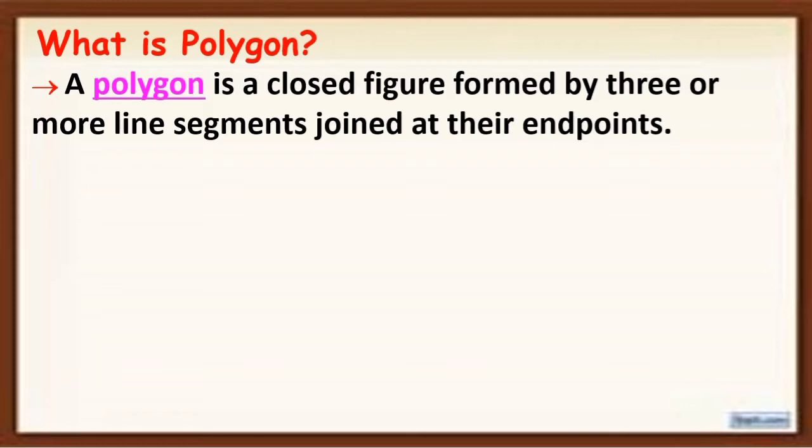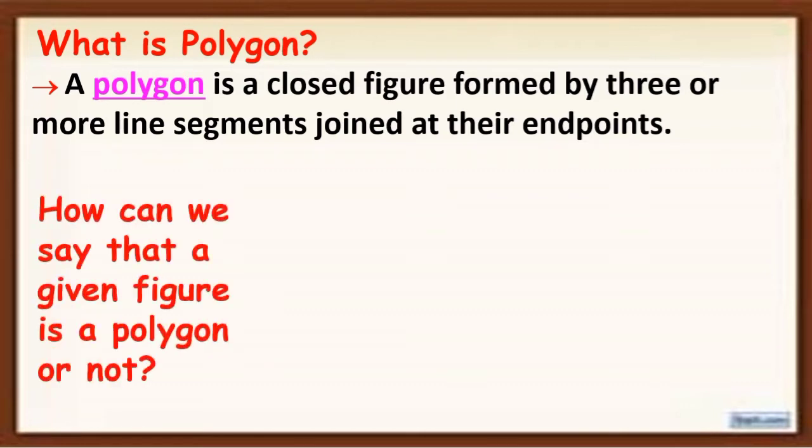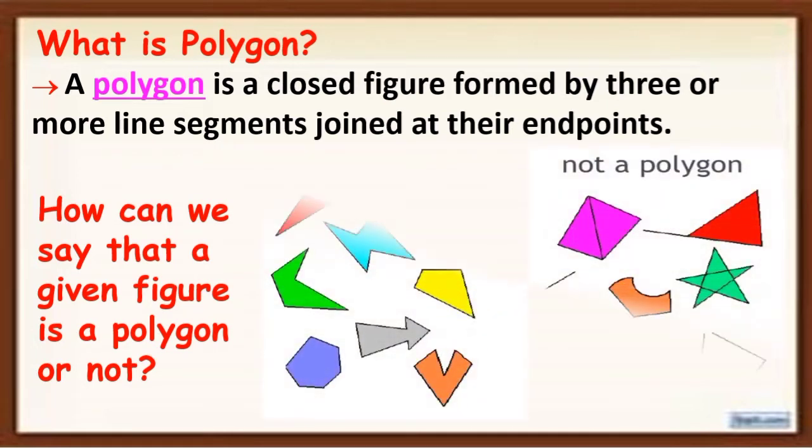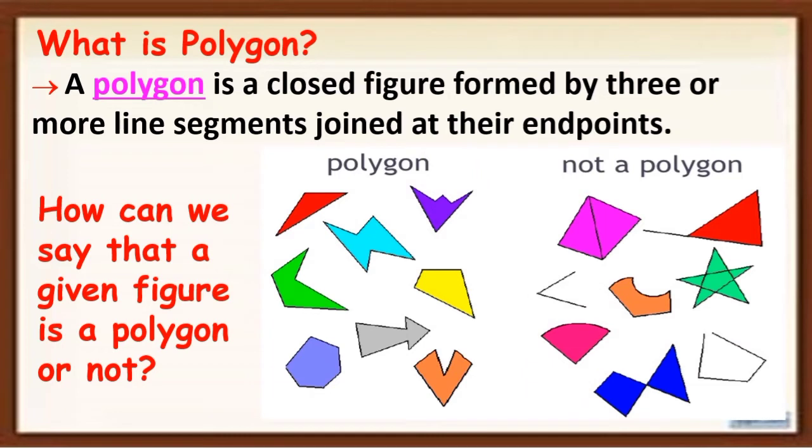So how can we say that a figure is a polygon or not? So these are the examples of Polygon and not polygon. Remember, when we say Polygon, it is a closed figure formed by three or more line segments.